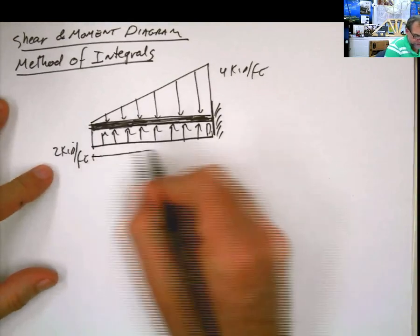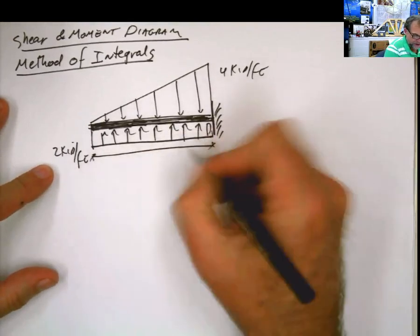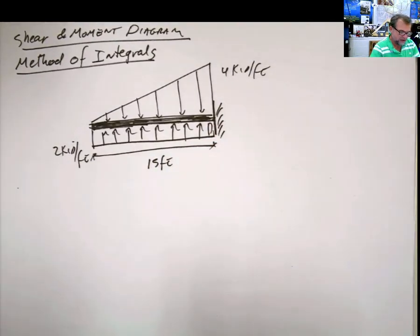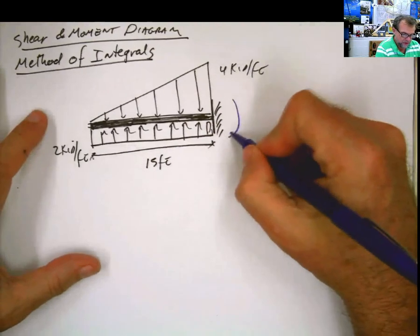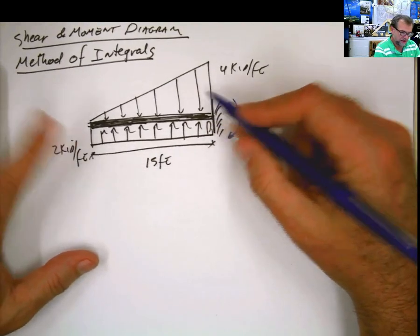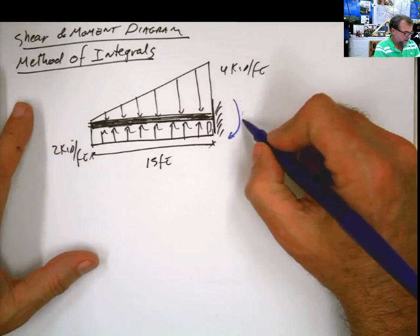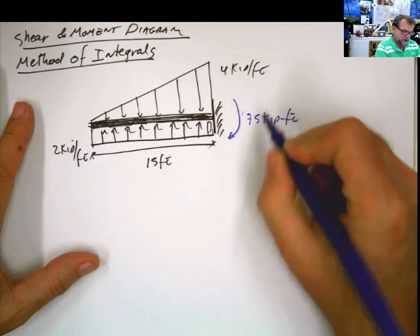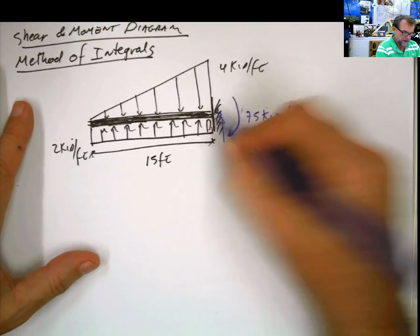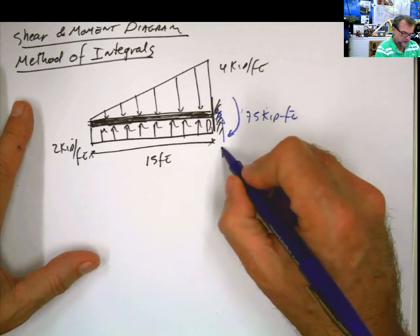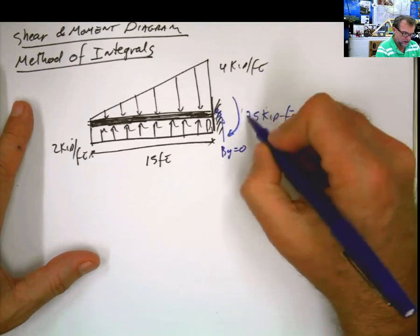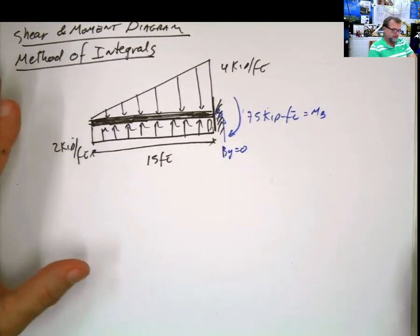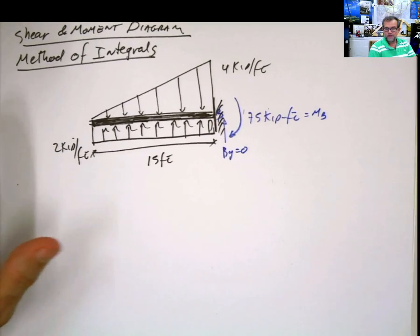In the previous video we calculated the reactions for this problem. With the summation of moments at this point, summation of forces in x and y, we calculated the moment at B. The moment at B was 75 kip per foot. The reaction here — this point is B — the reaction was 0. So By was 0 and Mb was 75 kip-ft. Those values were obtained from the previous video; please go watch it.